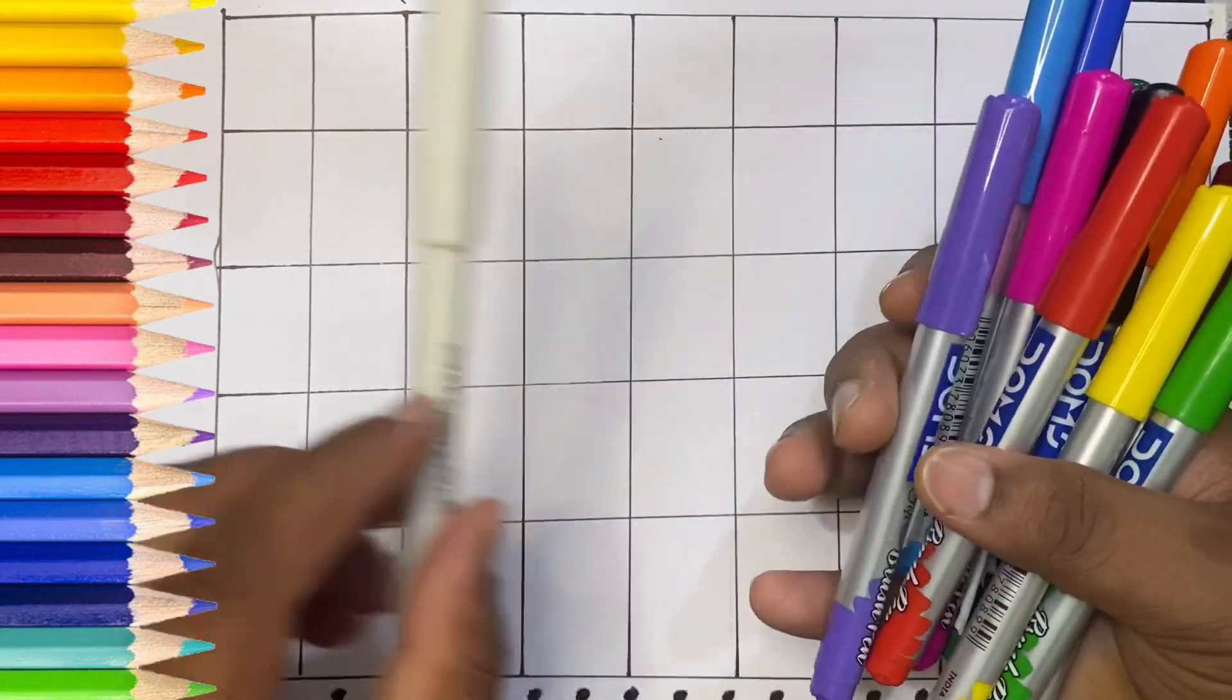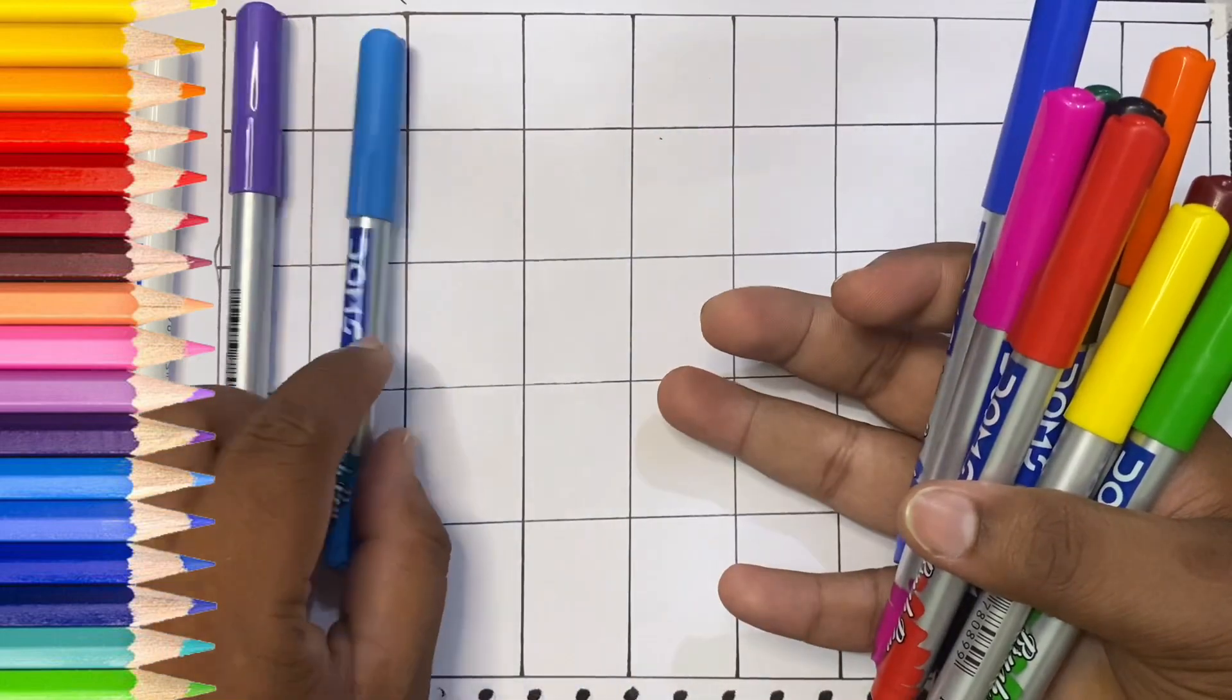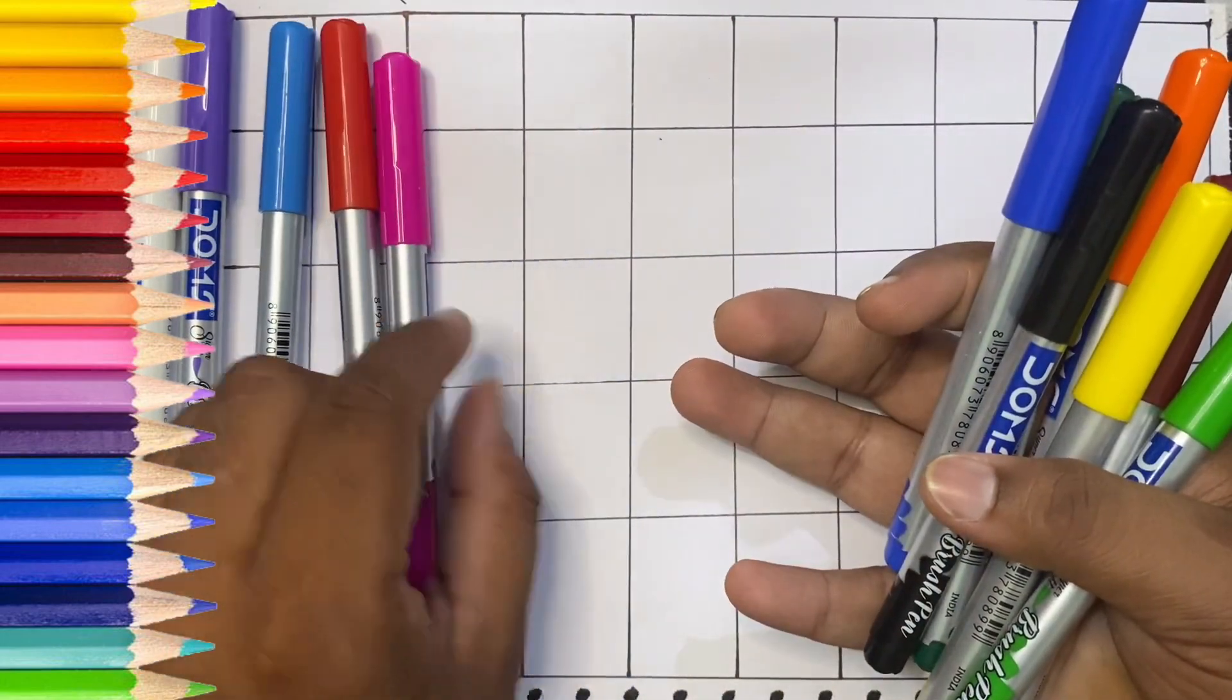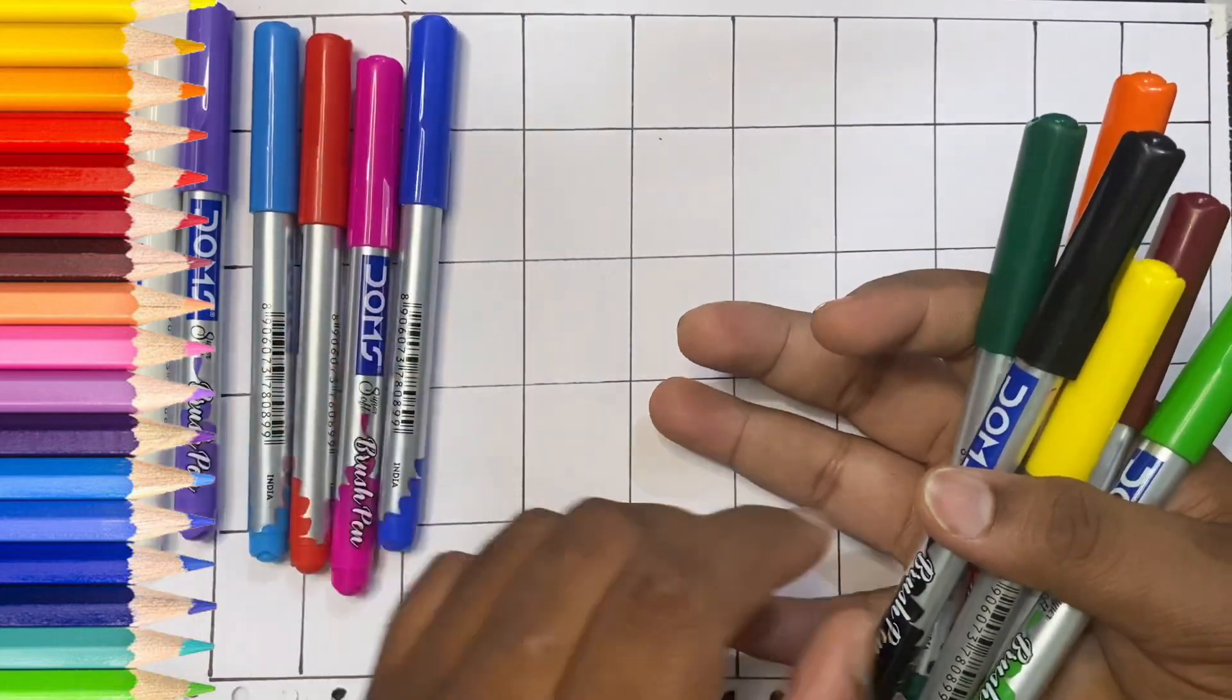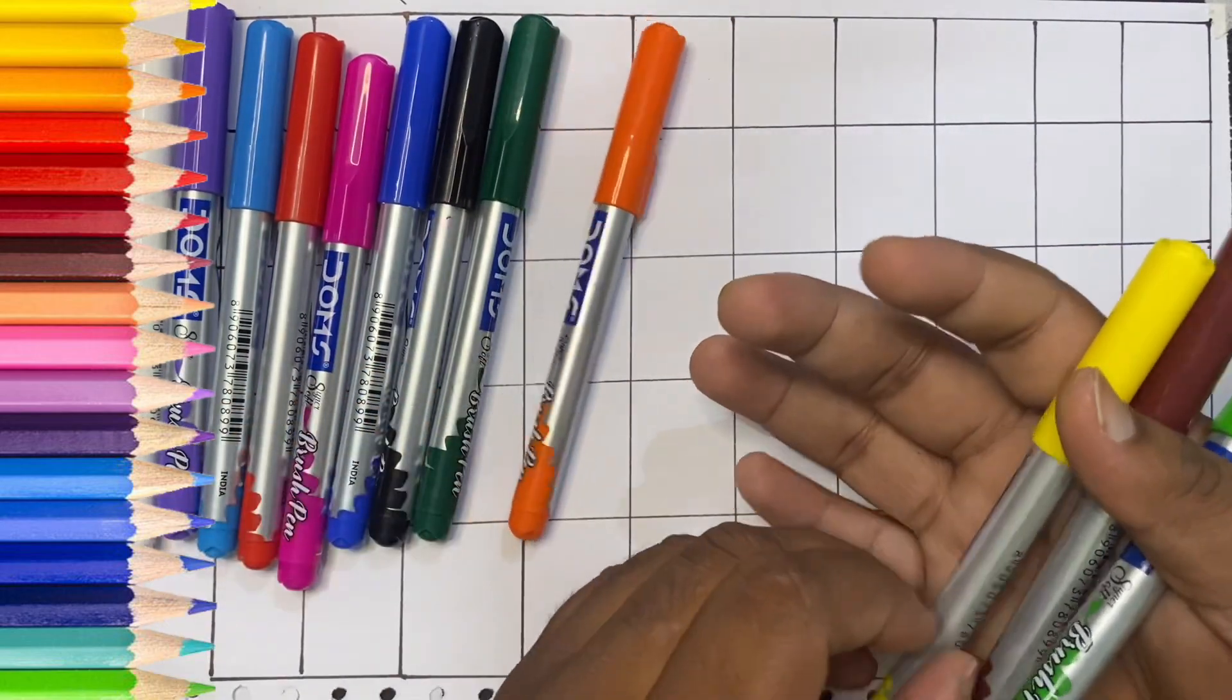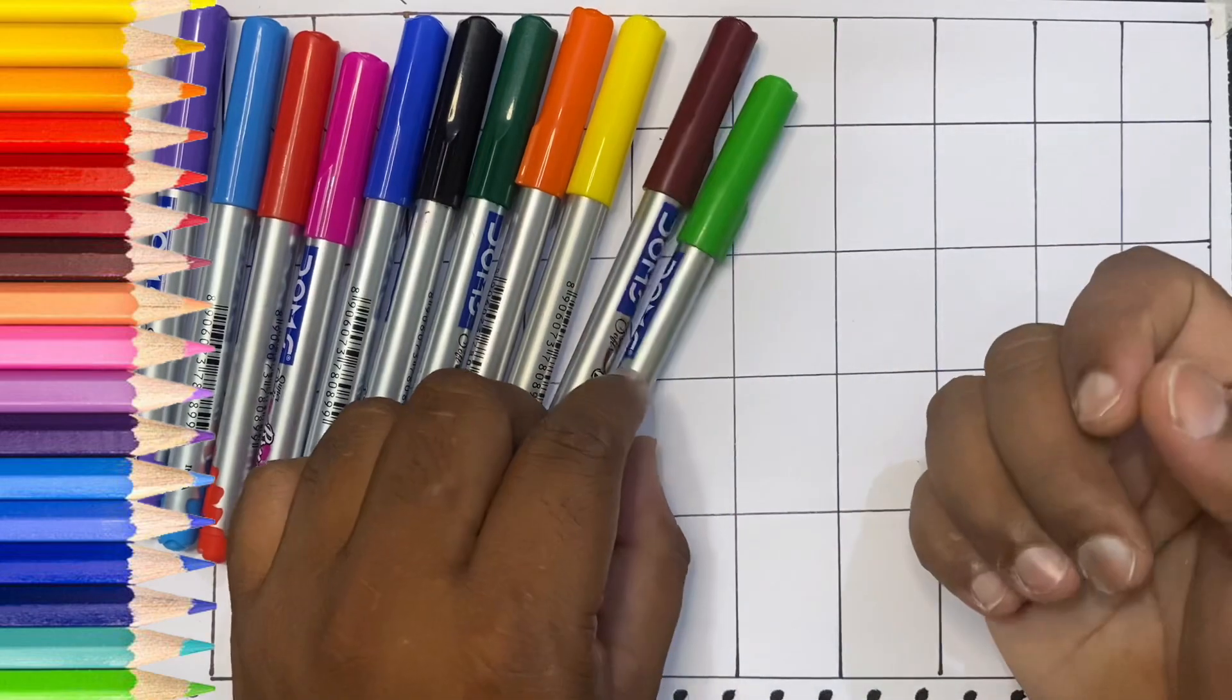Welcome kids, let us learn the colors. White, purple, blue, red, pink, blue, black, dark green, orange, yellow, brown, green.